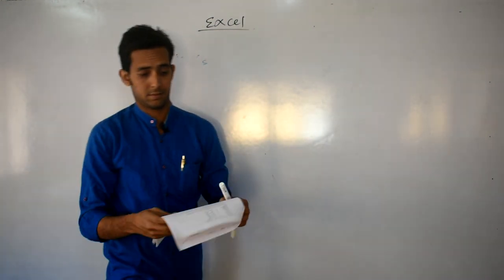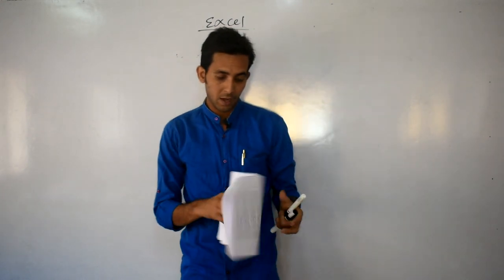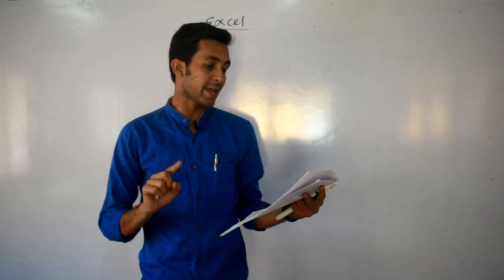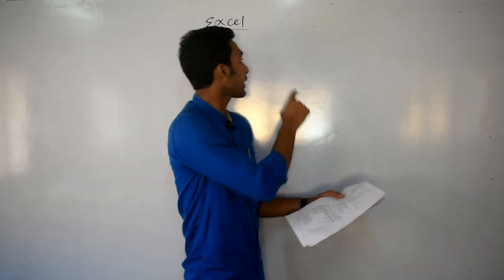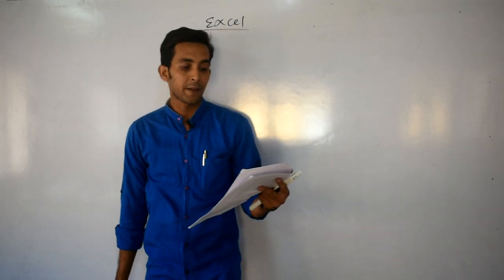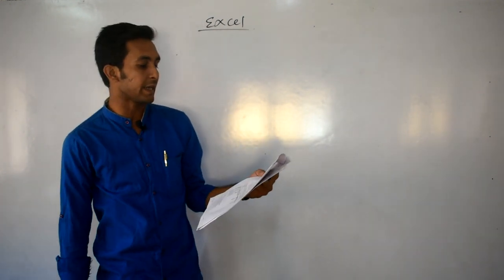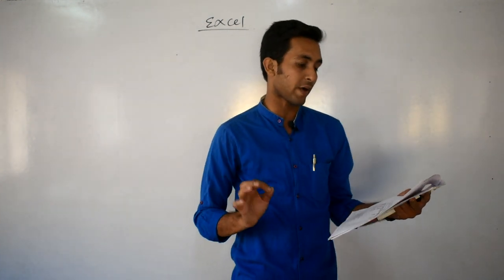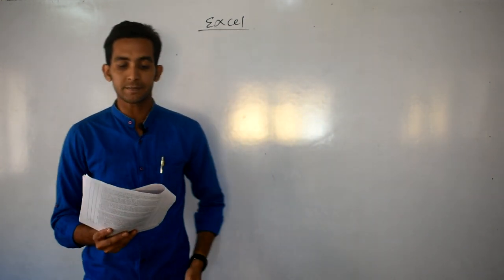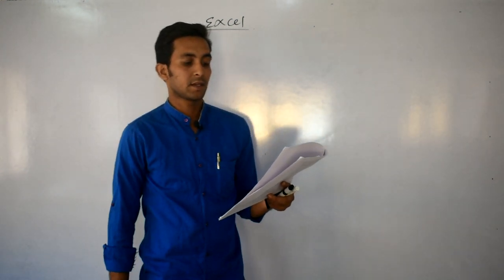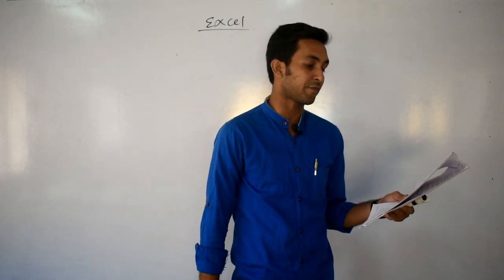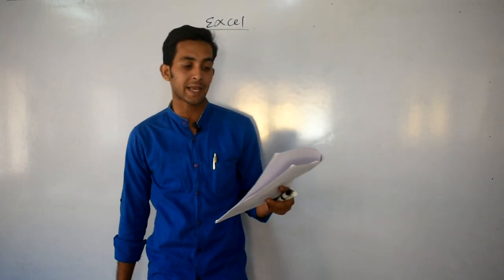There is an Excel sheet with 5 columns: A, B, C, D, E. In A1 is the name, B1 is gender, C1 is department, D1 is salary, and E is for bonus. The question asks: write steps to compute bonus at 40% of salary for salary up to 20,000; otherwise bonus is 50% of salary, in column E.